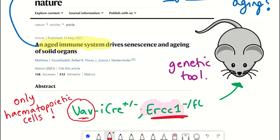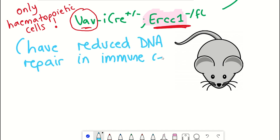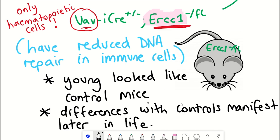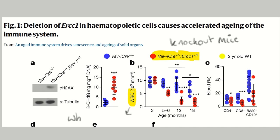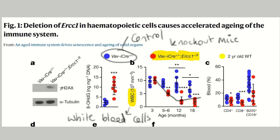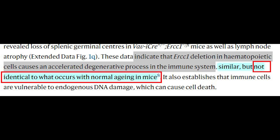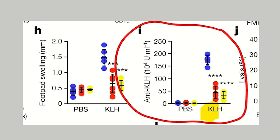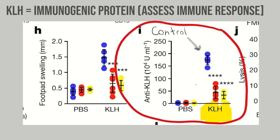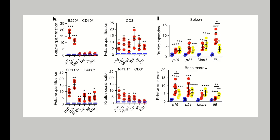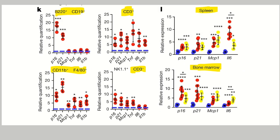Despite deficiencies in DNA repair machinery of immune cells, when these mice were young they still looked like wild-type mice, and symptoms only manifested later in life. One of the first observations was a reduction in white blood cell count after around six months of age. The model did induce an accelerated degenerative process in the immune system, as there was a reduced immune response in these ERCC1-defective mice when treated with the immunogenic protein KLH — similar to what's seen in observational human studies. They also observed increased expression of senescence markers in immune cells and increased expression of SASP components compared to controls, suggesting that more immune cells were themselves becoming senescent.